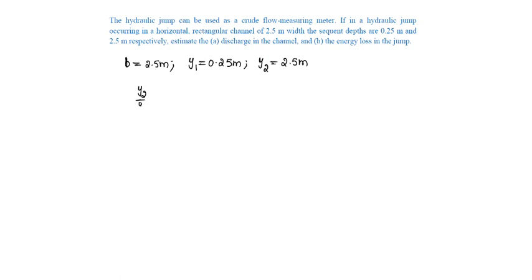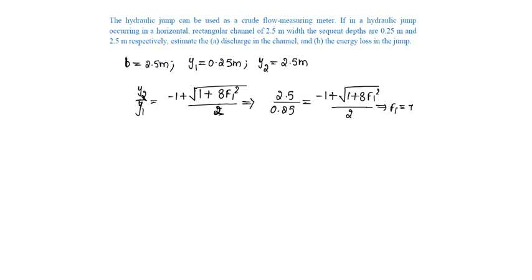We know y2 by y1 is equal to minus 1 plus under root of 1 plus 8 F1 square by 2, which will be equal to 2.5 by 0.25 is equal to minus 1 plus under root of 1 plus 8 F1 square by 2, from which F1 will be equal to 7.416.